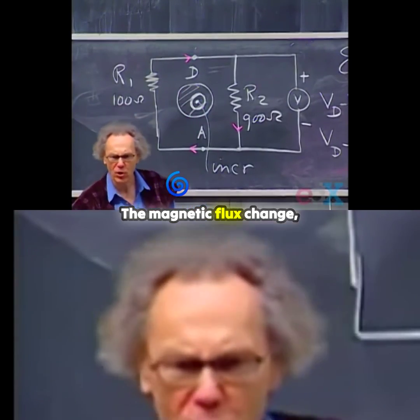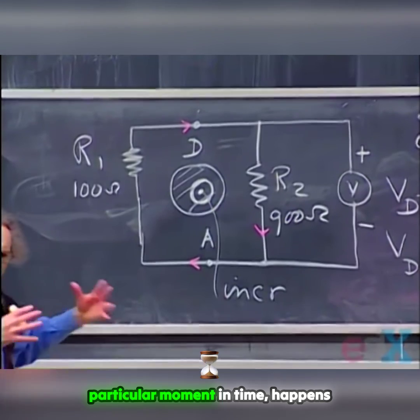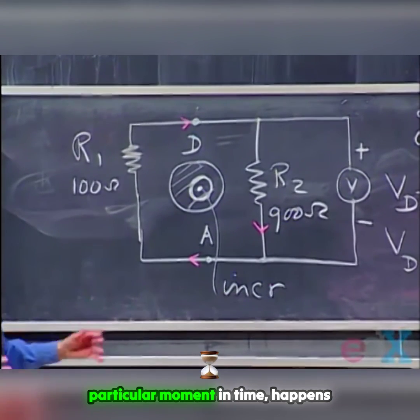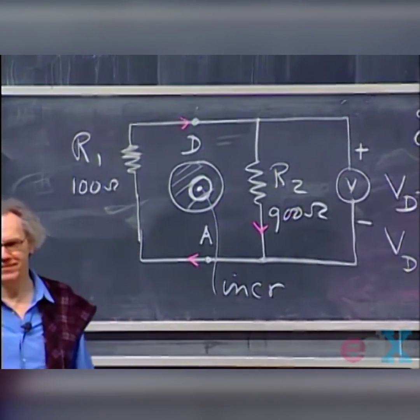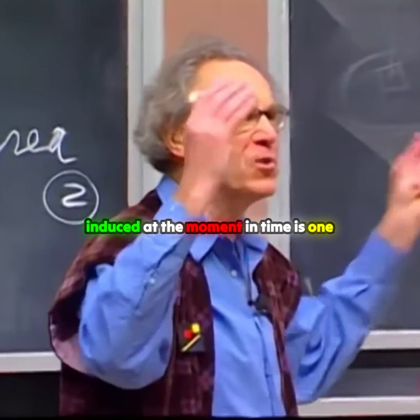The magnetic flux change, d phi dt, at a particular moment in time happens to be one volt. An amazing coincidence, isn't it? E induced at the moment in time is one volt.